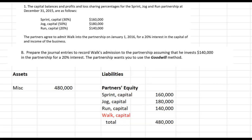Let's move to Part B. Prepare the journal entries to record Walk's admission assuming he invests $140,000 in the partnership. The money is still going onto the partnership's balance sheet, and Walk is still going to be a 20% partner, so his capital account has to represent 20% of the partnership's assets. The partnership wants us to use the goodwill method. What that means is nobody's getting a bonus — instead we need to get the assets right.